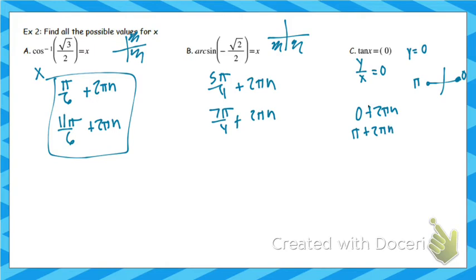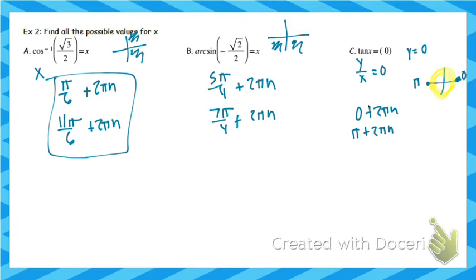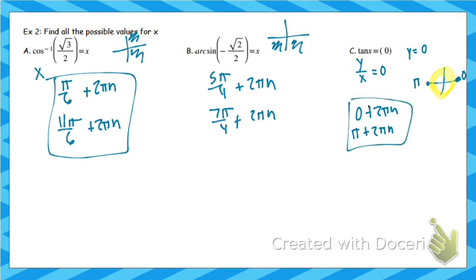You may notice there's a more concise way to write that answer. In order to get to each of those angles, all you have to add each time is a single pi. So the simplest way to write the answer is pi·n. If you don't see that, that's okay — you can keep both answers written out since that shows you understand what we're doing.